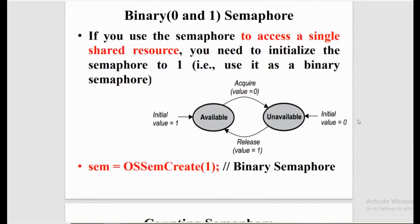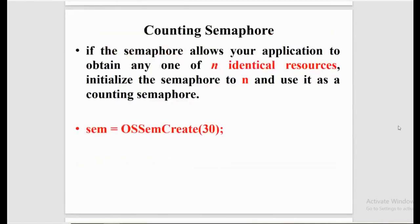If we use a semaphore to access a single shared resource, we initialize the semaphore to one. If the semaphore value is 1, the resource is available; if the value is 0, the resource is not available. In code, we write 'sem = OSSemCreate(1)' — this is how we create a binary semaphore. For a counting semaphore, if the application needs to obtain any one of N identical resources, initialize the semaphore to N.